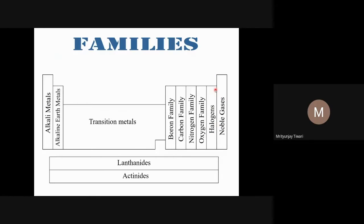The fluorine family elements are more commonly known as halogens. The oxygen family members are called chalcogens (C-H-A-L-C-O-G-E-N). The nitrogen family members are also known as pnictogens (P-N-I-C-T-O-G-E-N). The carbon family is called the tetrel family, as these elements often form four bonds. The boron family is called the triel family. You should remember halogen, chalcogen, and pnictogen especially, as these appear frequently in textbooks.